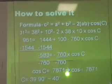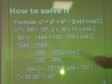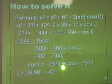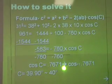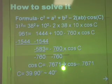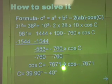So how do you solve it? First you have to know the formula. The formula is C squared equals A squared plus B squared minus 2 times A times B times cosine C.